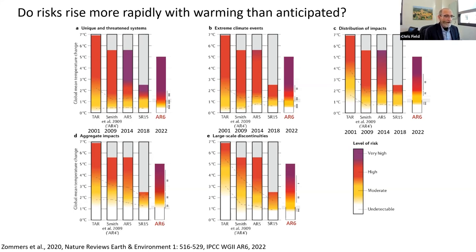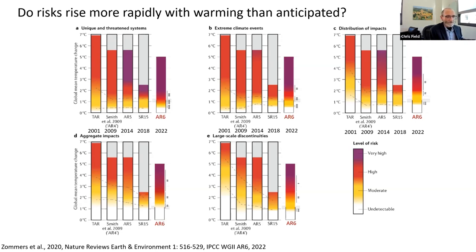This transition from thinking that 2°C was mostly okay in the early years of the century to recognizing the profound risks that 2°C really presents is the accomplishment of climate and impact science over the last 20 years.